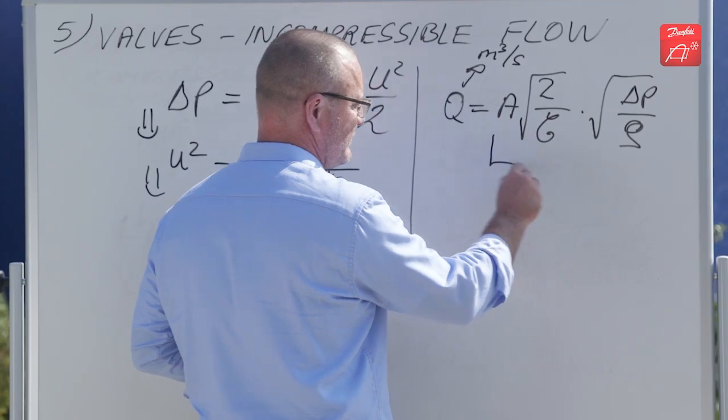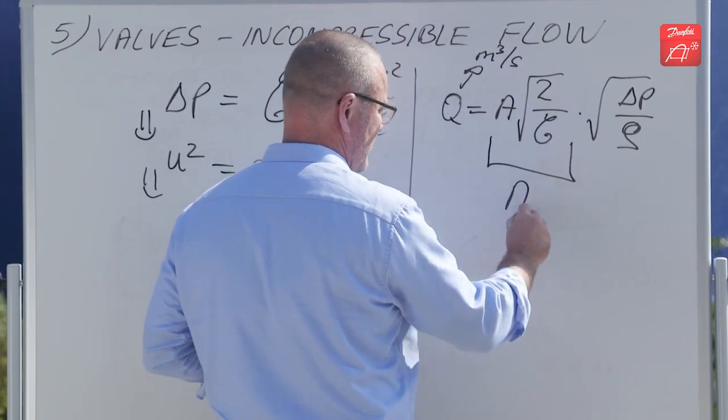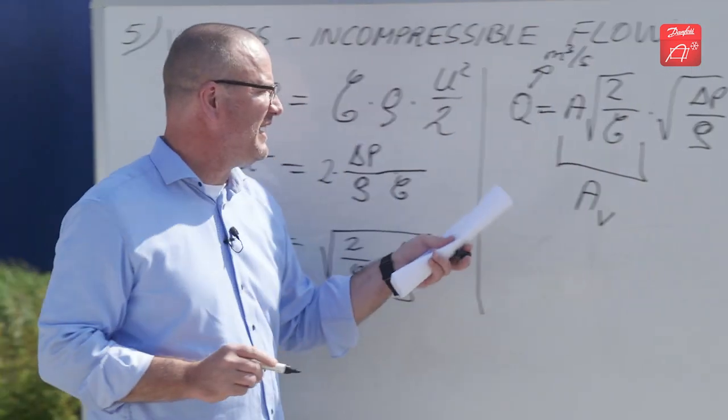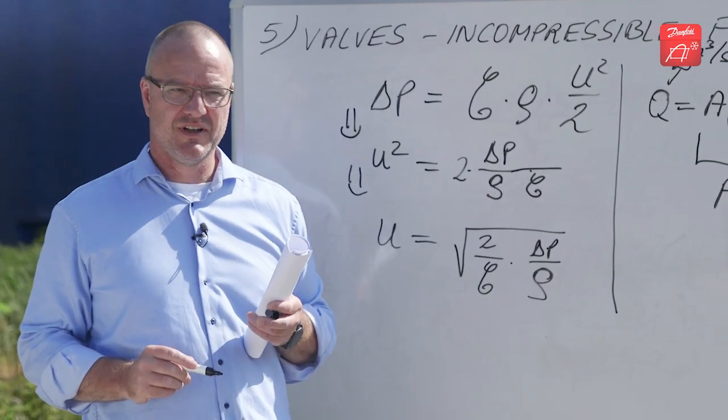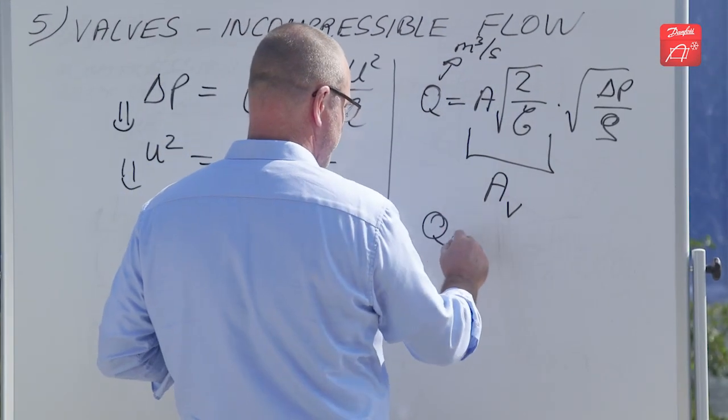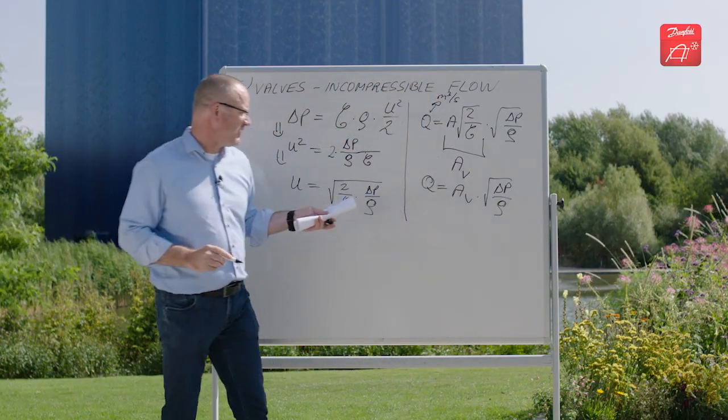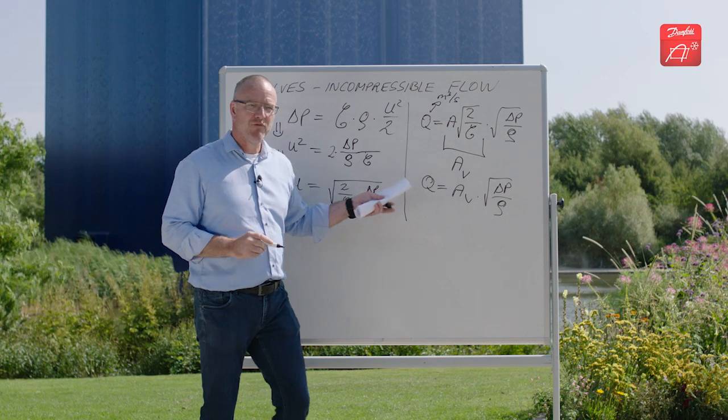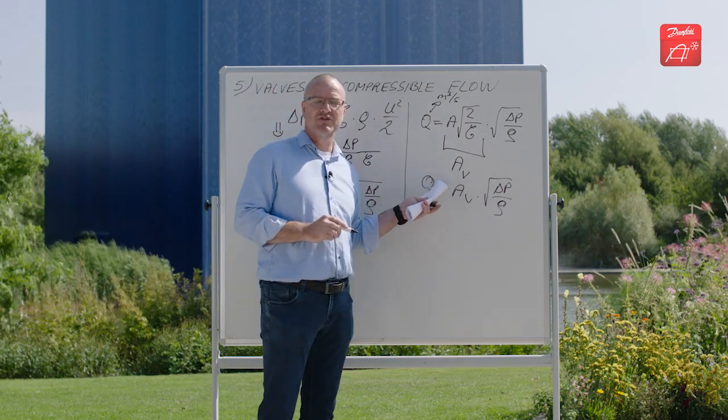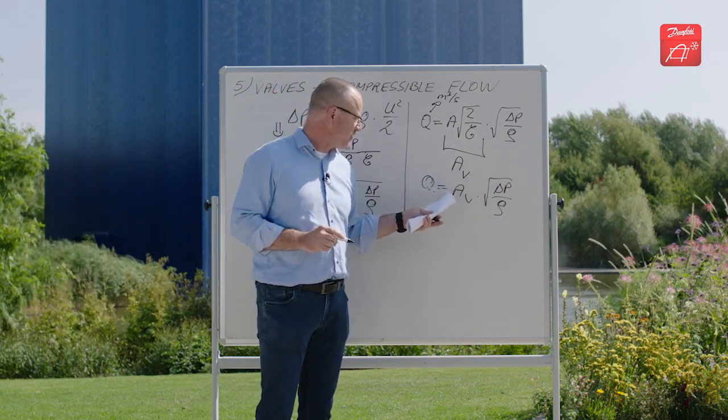This value here we call Av, it's the flow coefficient. So we end up with an equation looking like this. If you've ever worked with valves, you might recognize this equation. Now we're getting to something you're used to looking at.